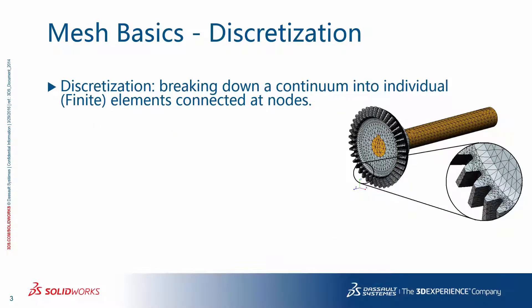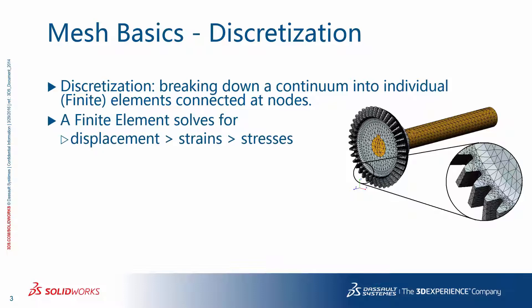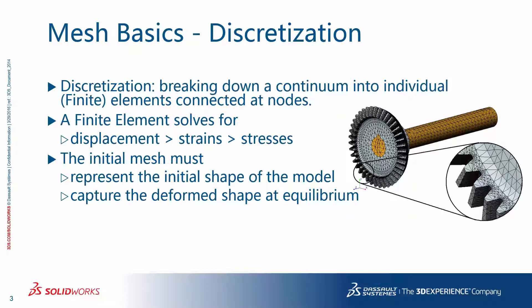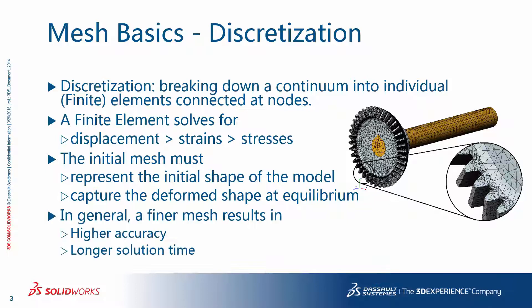Meshing, or using the more technical word for it, discretization, is the step of breaking down a continuum — in our case a CAD model of a part or assembly — into individual or finite elements that are connected at nodes. A finite element analysis solves for displacements at the nodes and calculates the strains and stresses. The initial mesh must, firstly, represent the initial shape of the model and, secondly, capture the deformed shape at equilibrium, which is dependent on the element stiffnesses formulated. In general, a finer mesh results in higher accuracy at the expense of longer solution times.